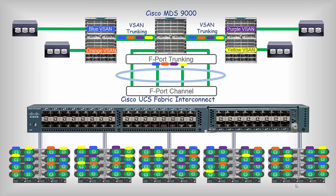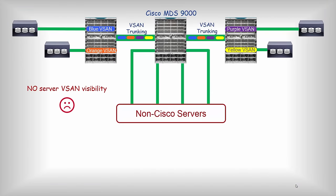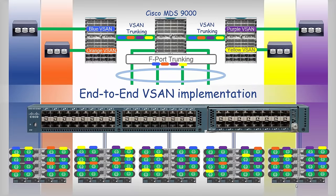The server vHBAs can be directly assigned to the vSAN on the Fabric Interconnects. As a final result, you can have different SANs for different departments — finance, HR, engineering, sales, etc. — by assigning departmental storage ports to the corresponding vSAN on the MDS switches. These vSANs can spread all the way from storage to servers, thanks to F port trunking. Non-Cisco servers do not have vSAN capability. Hence, you would have to waste many more ports to connect each HBA port to a different vSAN, which becomes extremely complex when multiple VMs are running on the same physical server. End-to-end vSAN implementation is another merit of having Cisco MDS and UCS together.